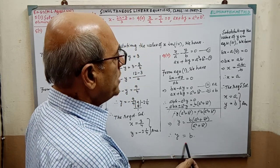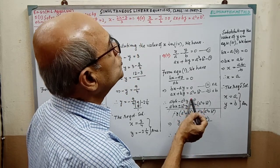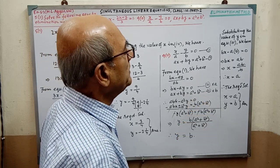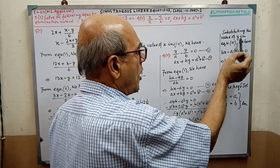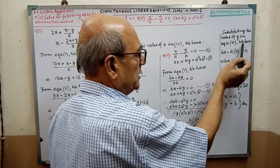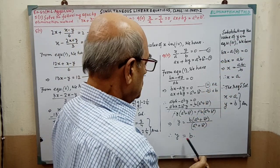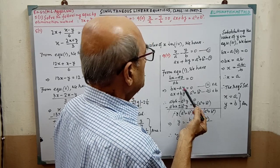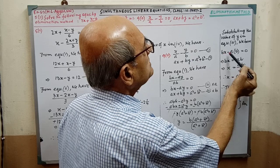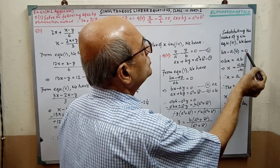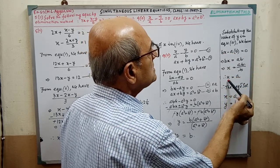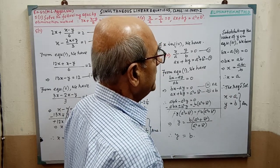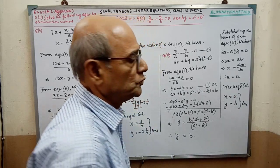This value we have to substitute between the two equations — any equation. If I put equation 3, then it will be easier. Substituting the value of y in equation 3, in place of y we have to put the value b. So bx minus a times b equal to 0. By simplifying, it is coming x equal to a. Therefore, the required solution is x equal to a and y equal to b.